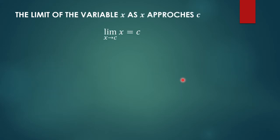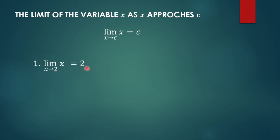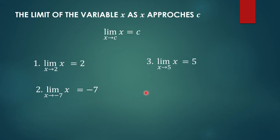The limit of x as x approaches c is equal to c. This is just straight substitution for our variable x. So if we are asked to get the limit of x as x approaches 2, that is equal to 2. For negative 7 and 5, the answers would be negative 7 and 5 respectively.